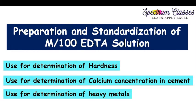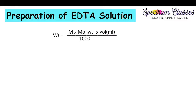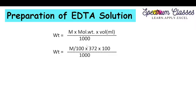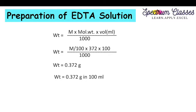Before showing you the lab activity, I am going to show you the calculation part first. Here is the formula: molarity × molecular weight × volume in mL, divided by 1000. I am going to prepare M/100 EDTA solution. The molecular weight of EDTA is 372, and I want to prepare this solution in 100 mL. Therefore, on solving this equation I get 0.372 grams for 100 mL solution.